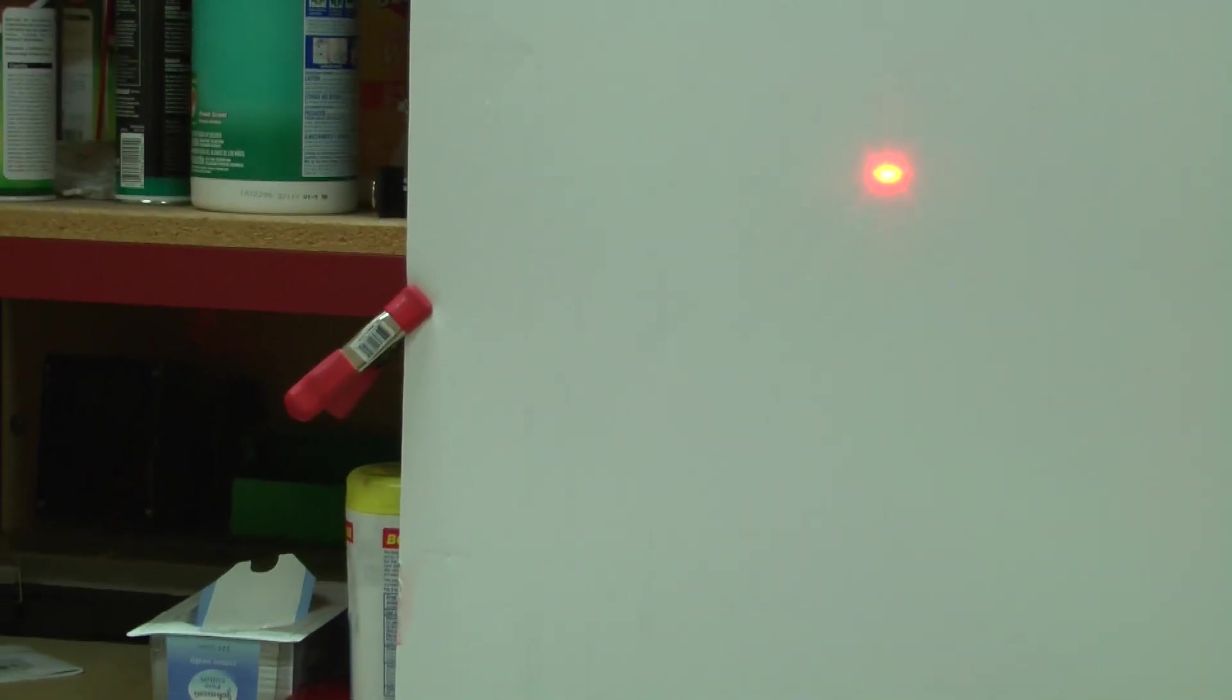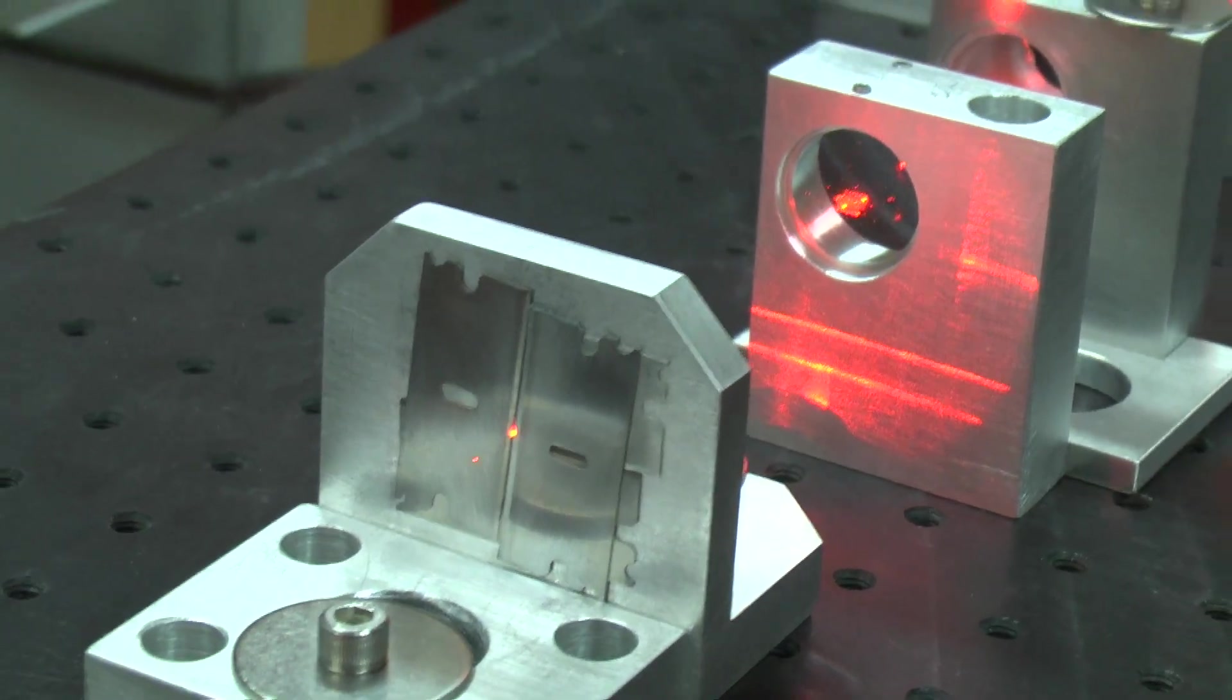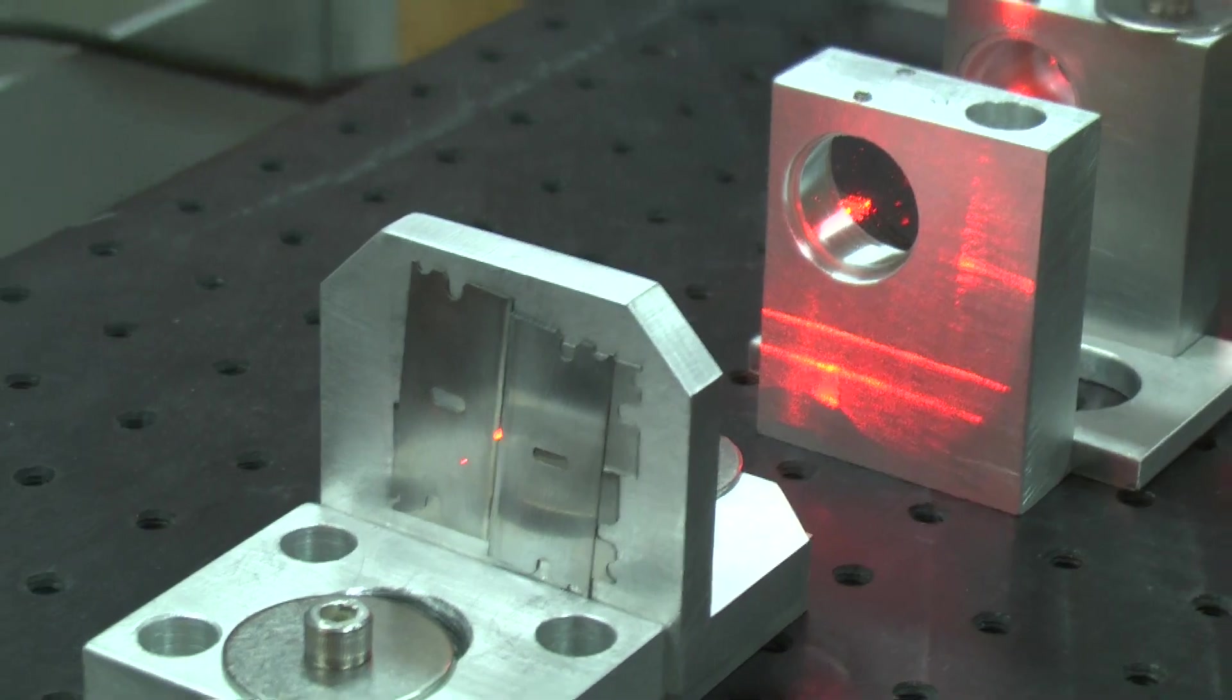And then finally, that little bit of extra reflection that you see from the top, can simply be blocked by putting a little razor blade or even a card, because the intensity is low, using the magnets above.